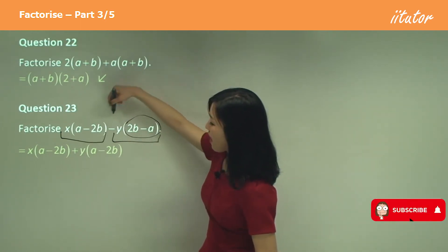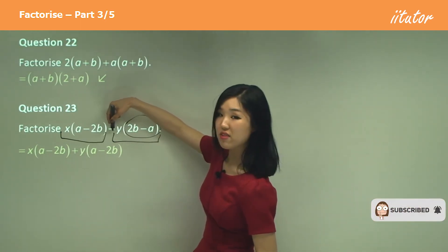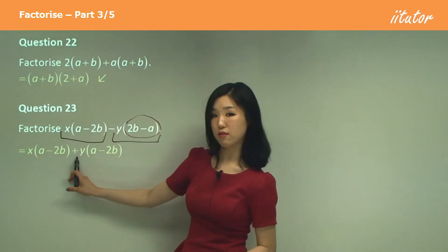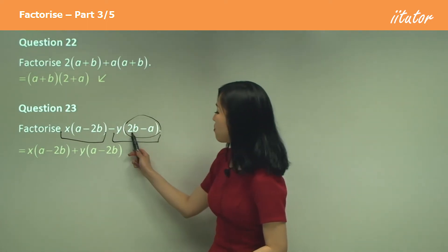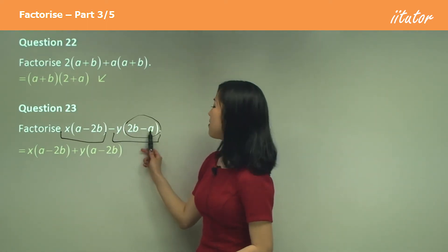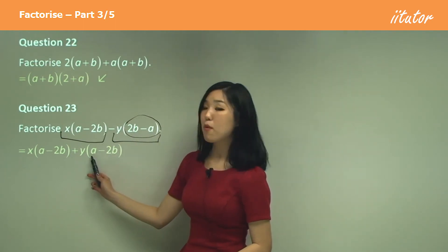So if I take a negative out, see how we already have a negative there? So negative, negative will become a positive. So because we took the negative out, this positive 2b will become negative 2b and this negative a will become positive a.